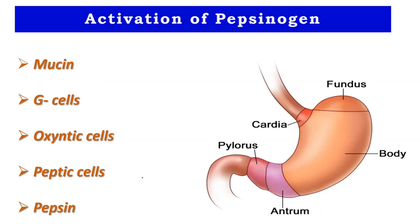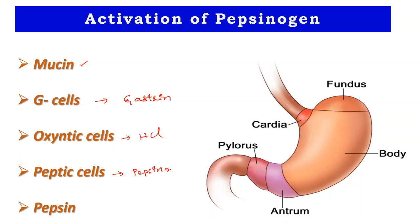To summarize the activation of pepsinogen: mucin is the mucosal secretion from the lining cells; G cells synthesize gastrin, which exists in three types with G17 being the biologically active form; oxyntic cells secrete HCl; and peptic cells secrete pepsinogen and other digestive enzymes. That's all about the activation of pepsin.